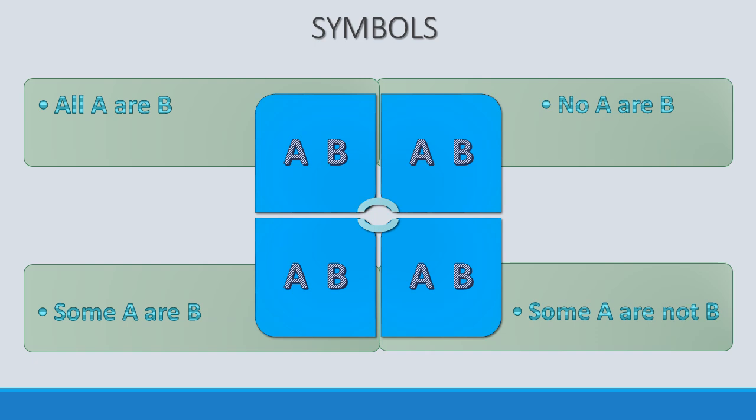Now let's learn the most important part: the symbols. Please listen carefully to understand and memorize properly before proceeding. We will basically use three signs: a tick mark for the whole set, a cross mark for a subset, and a colon in between if the sentence is negative. For the first type, 'All A are B', it means the complete set of A belongs to the set of B. We are not sure whether the complete set of B belongs to A or not, so we put a tick over A and a cross over B.